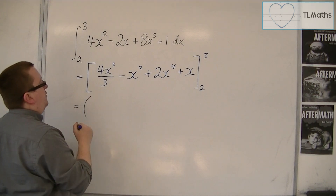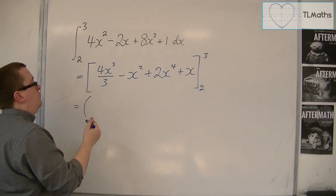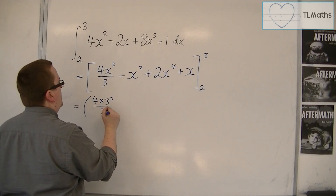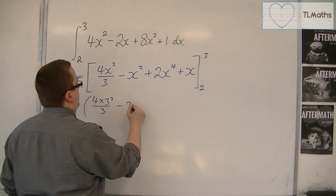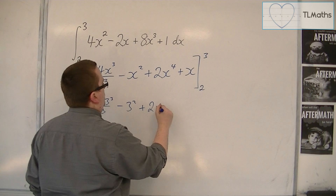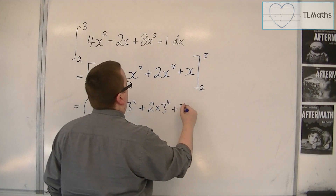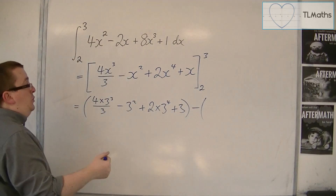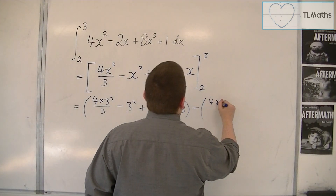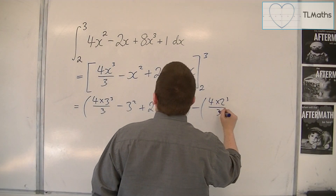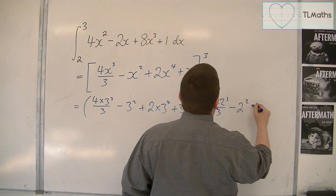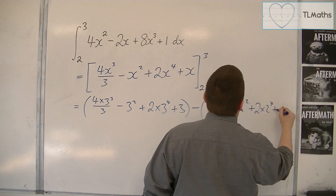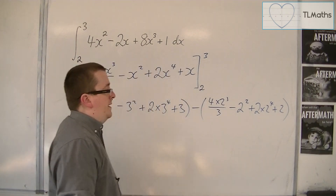We now need to evaluate. So we're going to substitute 3 first. So we've got 4 lots of 3 cubed over 3, take away 3 squared, plus 2 lots of 3 to the 4, plus 3. Then we're going to substitute in 2: 4 lots of 2 cubed over 3, take away 2 squared, plus 2 lots of 2 to the 4, plus 2. Close the bracket.